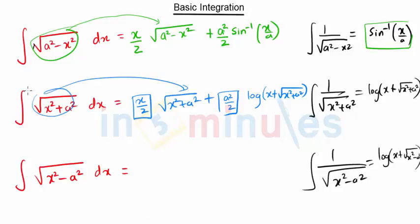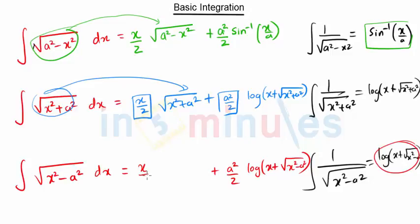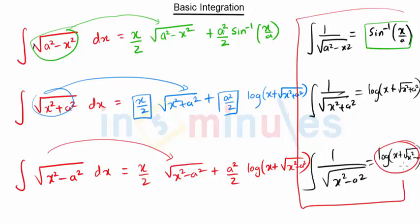Similarly for the third formula, here we will have plus a square upon 2 into this term — log of x plus root of x square minus a square — then here we multiply x by 2, and then this term root of x square minus a square. So in this way, by using these results we can directly write all these formulas and there is no need to remember all the things separately.